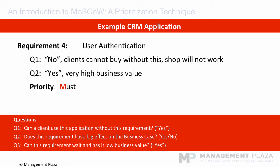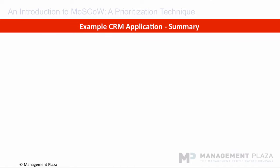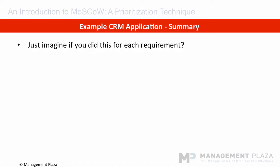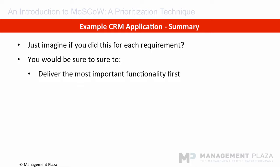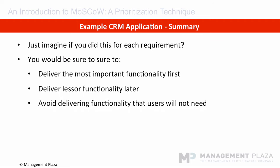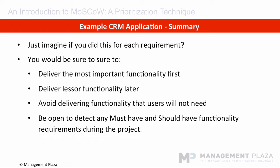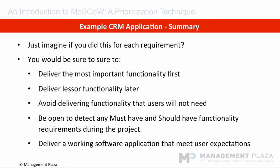Now we've gone through the four requirements, and hopefully this gives you a good idea on how to use Moscow. Let's do a quick summary of using Moscow with this example CRM application. Just imagine if you did this for each requirement — you would be sure to deliver the most important functionality first, prioritize the most important things to do first, deliver lesser functionality later, and avoid delivering functionality that users will not use, saving money. Be open to detecting any must have or should have functionality requirements during the project and prioritizing these over existing requirements if needed. And lastly, delivering a working software application that meets users' expectations as early as possible, so users can work in the way that they want to.